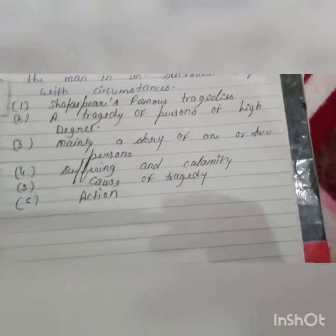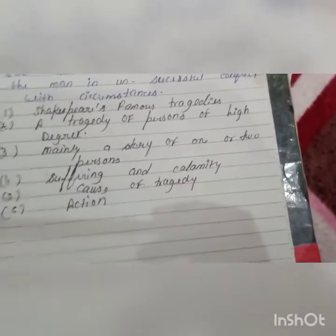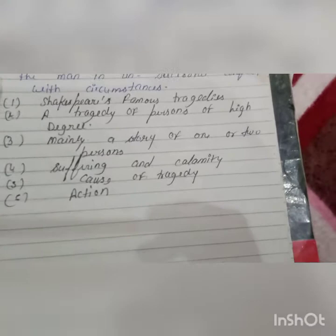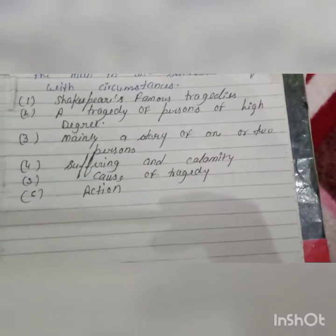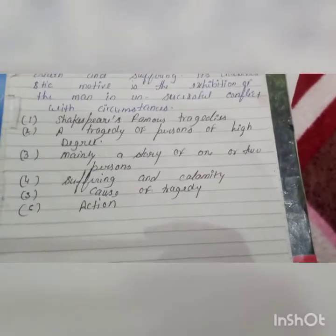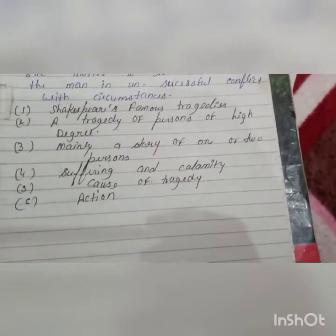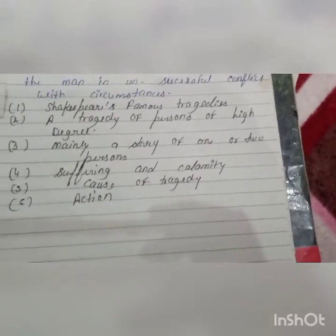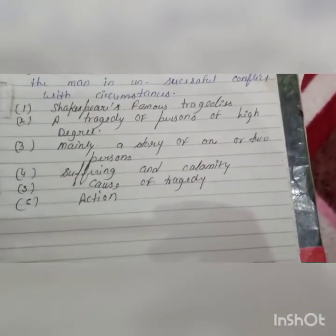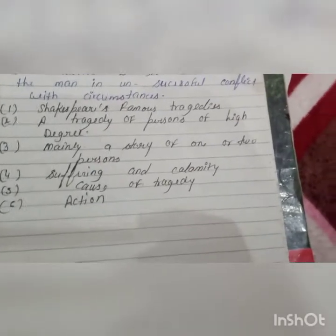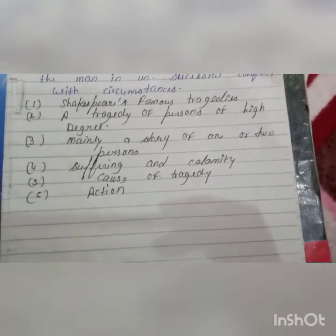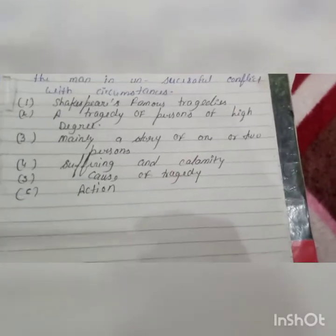The second characteristic is that it is mainly a story of one or two persons. Though in Shakespeare's tragedy there are a number of persons, yet the tragedy is preeminently the story of one person — the hero — or at most of the hero and the heroine. The concentration on the hero and the heroine, who generally come to battle at the end of the play, leads up to and includes the death of the hero.